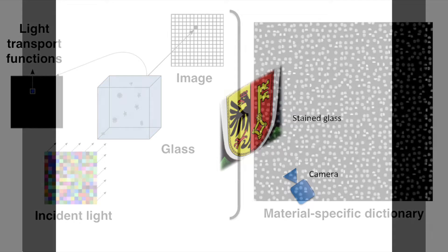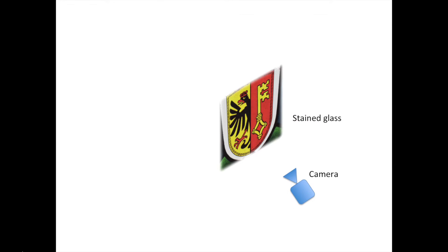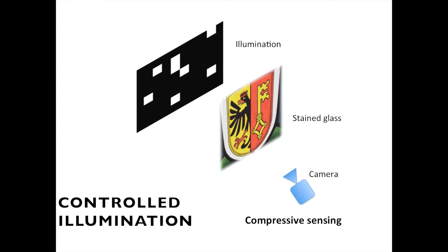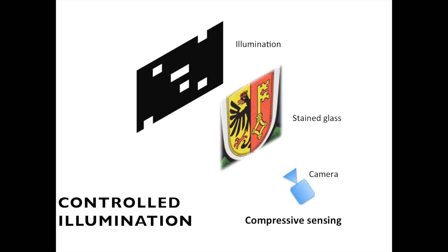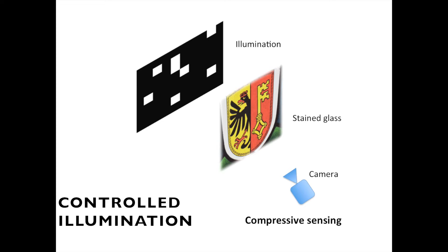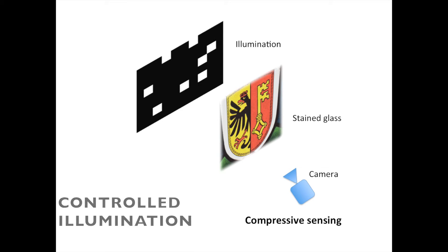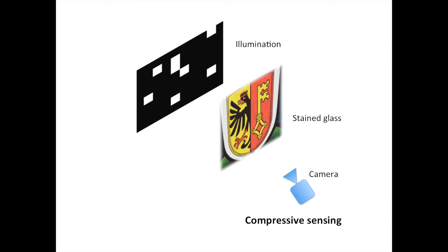In the second step of our technique, we move on-site and acquire data for a particular stained glass window of interest. If a controlled illumination setup can be put in place, then exact recovery of the light transport matrix is obtained using compressive sensing. In this case, the learned dictionary is used to speed up the acquisition procedure.